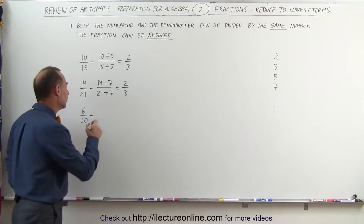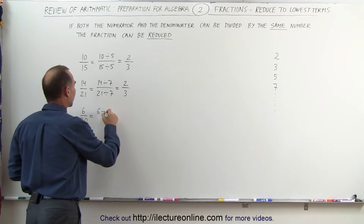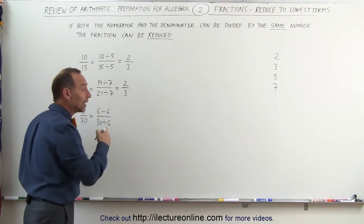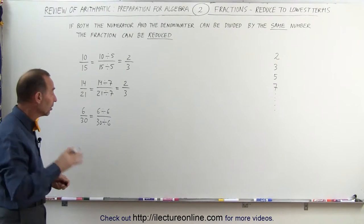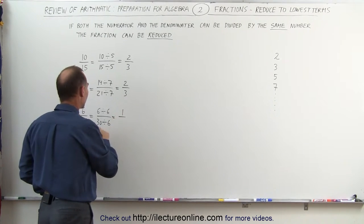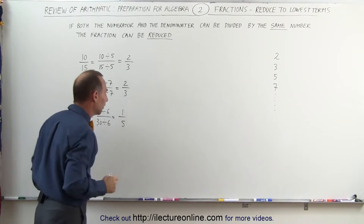And so we can write this as six divided by six, and thirty divided by six. Always remember that you have to divide both the numerator and the denominator by the very same number. This can then be written as one, and six goes into thirty five times or one-fifth.